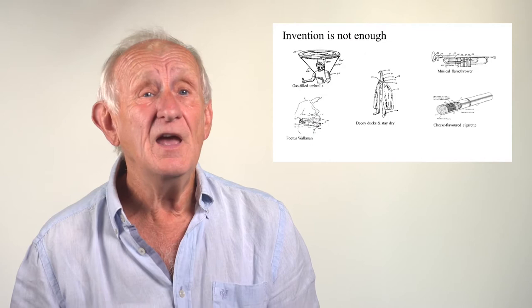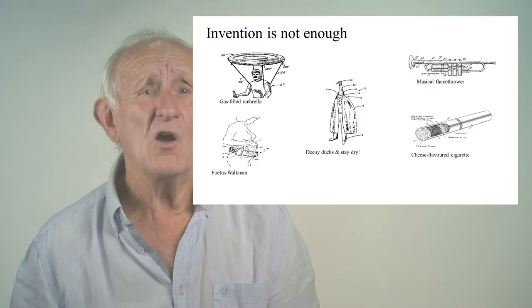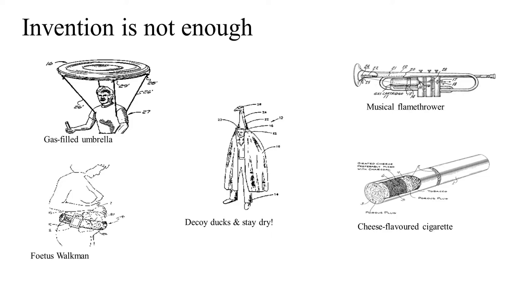Now here's some examples of inventions. These are all in the US Patent Office, and what that indicates is that somebody believed in their idea enough to write it down, to get some lawyers to help, perhaps somebody to help draw the pictures, but essentially to lodge a patent.